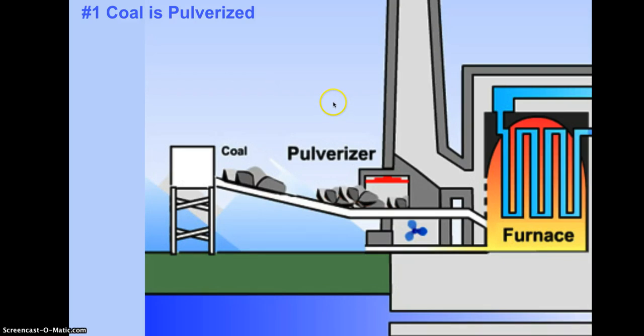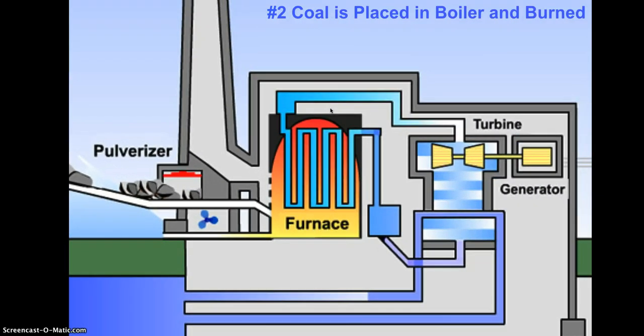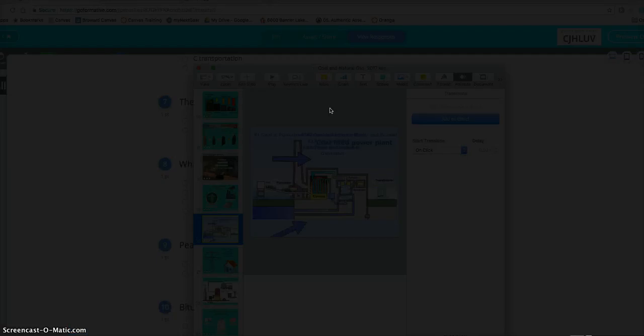Once we pulverize it, what are we going to do with it? What do we do with it first, actually, before pulverizing? Clean it. And that's nowhere in the review, so we're going to go over that after. So once we clean it, then we put it to pulverize, then we put it in a boiler. And once it's in the boiler, it's burned. And then you're going to add water. I don't have to go over that, right?